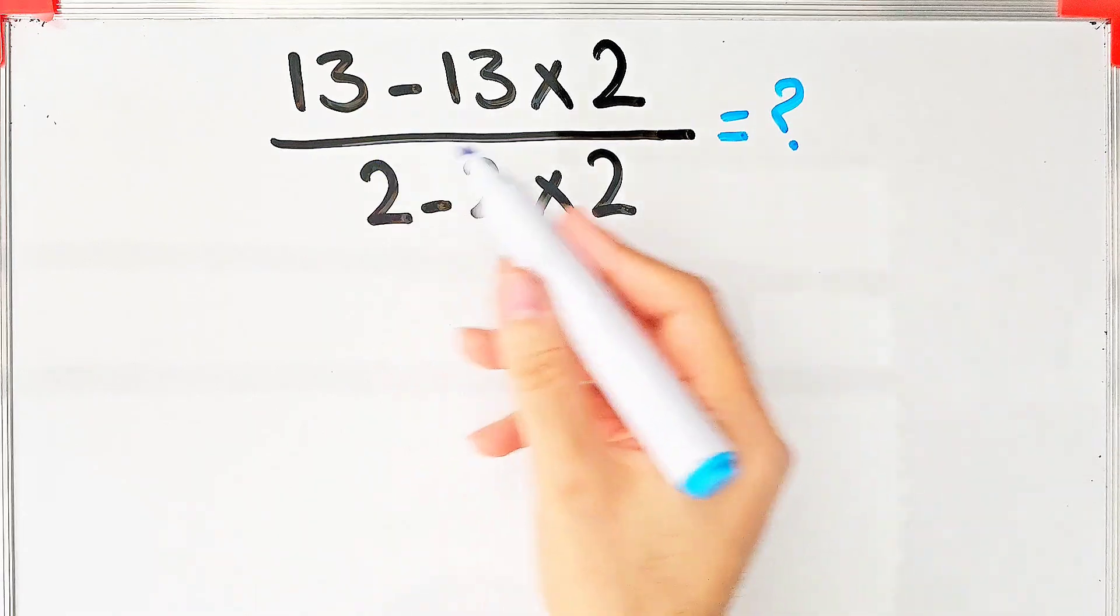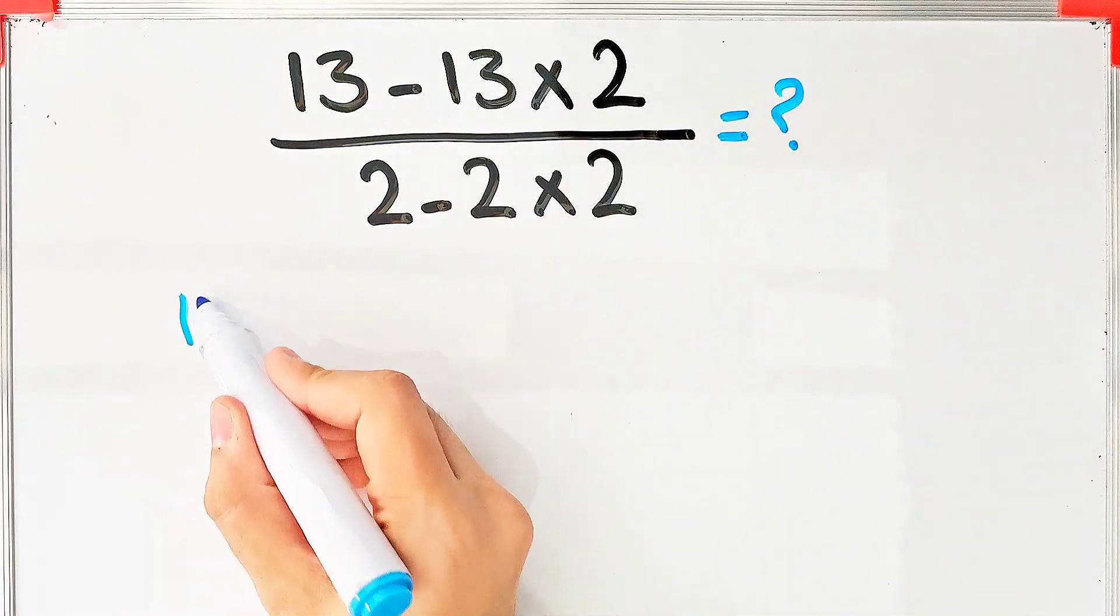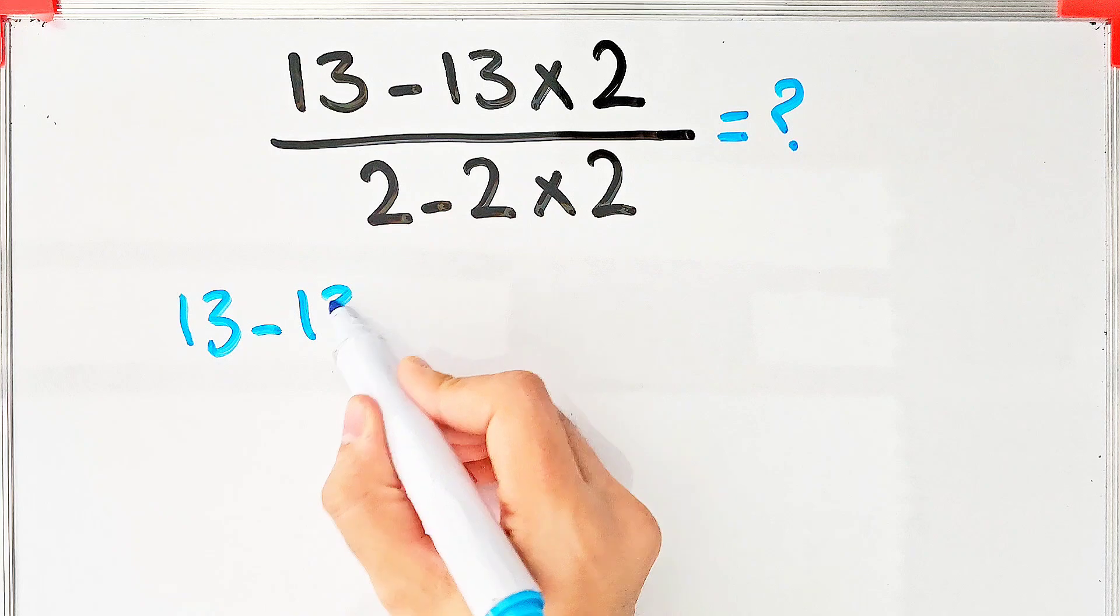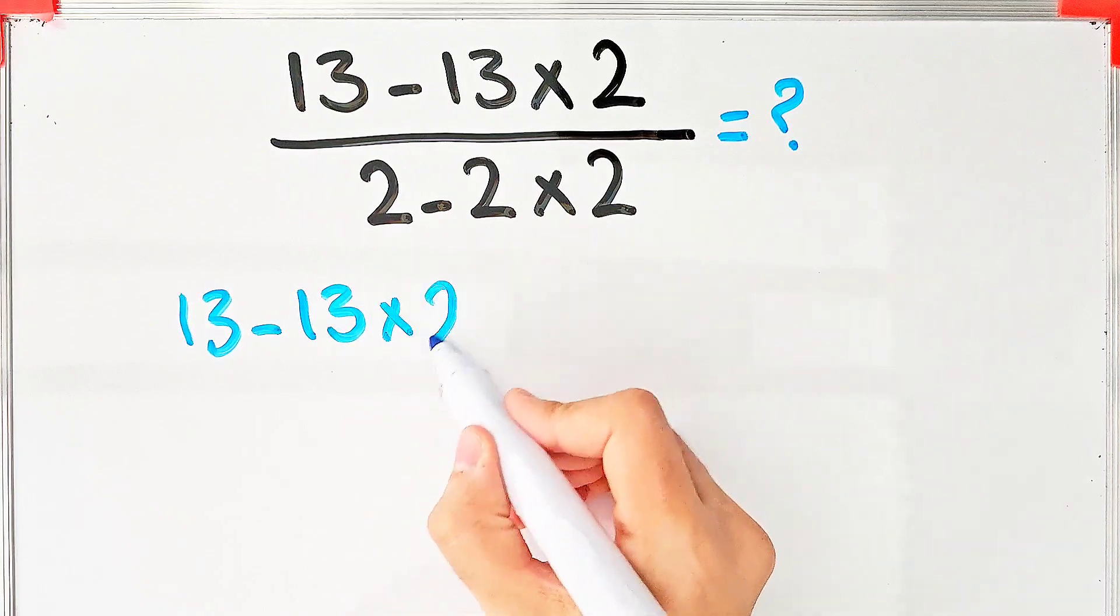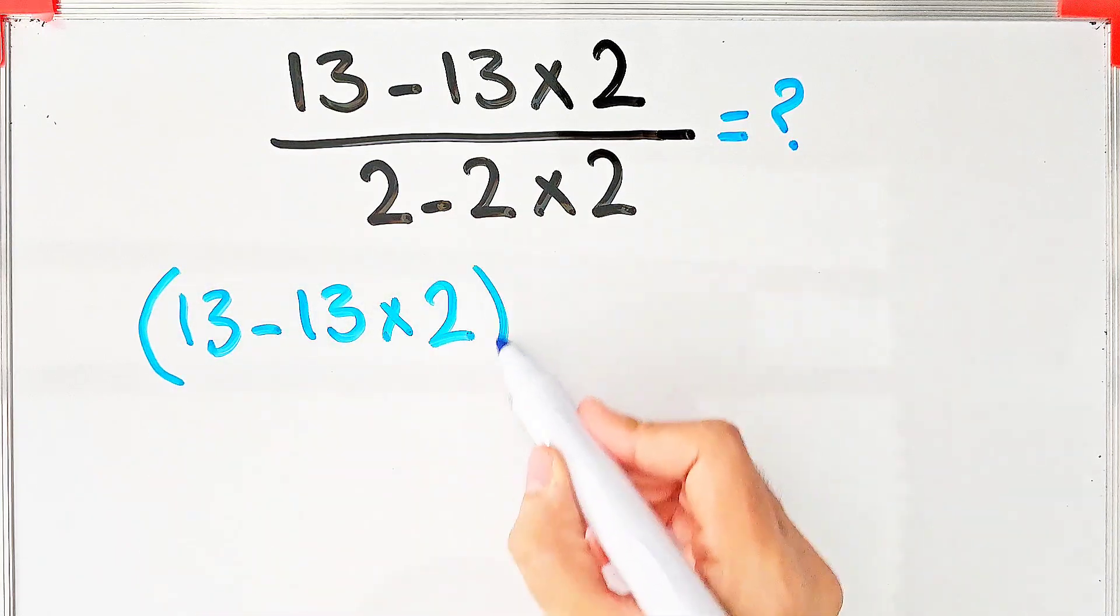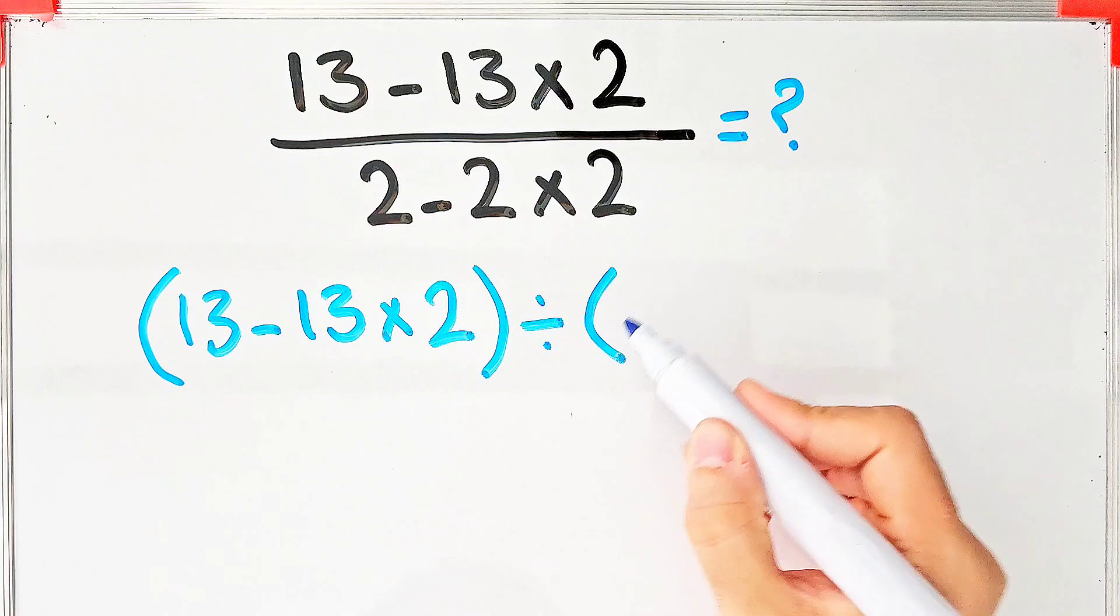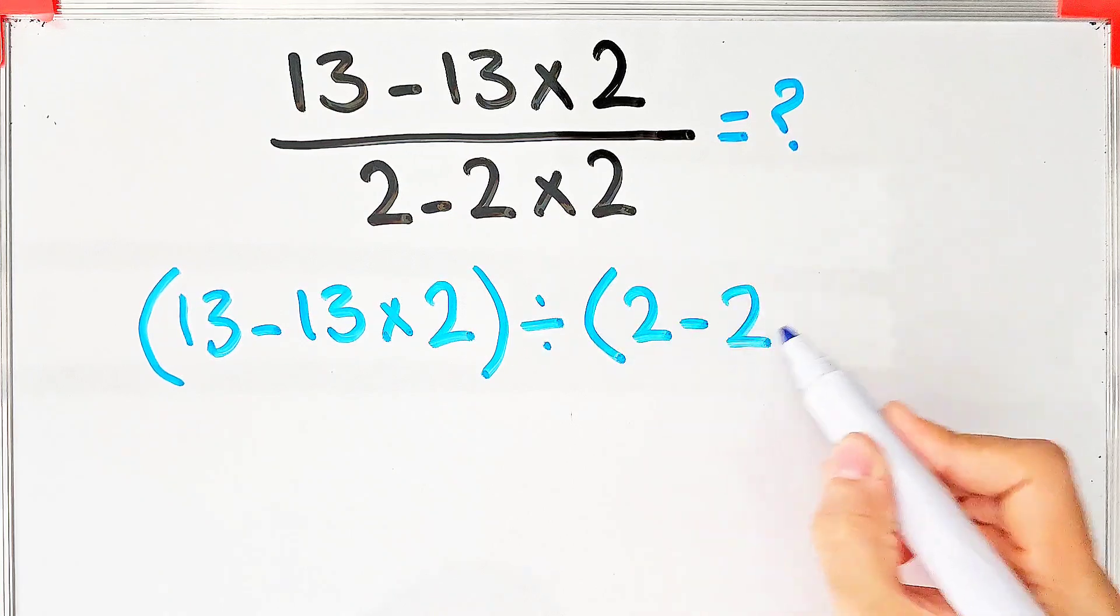Let's solve this step by step together. First, we simplify the question: (13 - 13×2) ÷ (2 - 2×2).